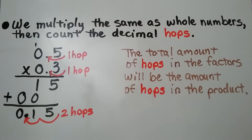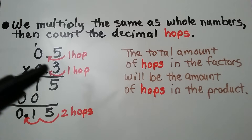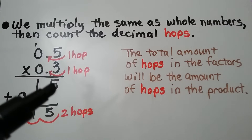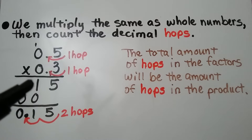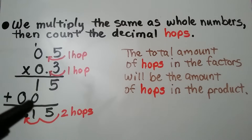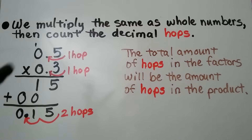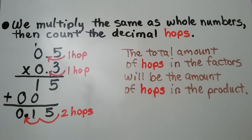We multiply the same as whole numbers, then count the decimal hops. We have 5 tenths times 3 tenths. We multiply it just as if we were multiplying whole numbers. We do 3 times 5, which is 15. We regroup the 1 and write the 5 down. 3 times 0 is 0, plus 1 is 1. And 0 times 5 is 0, and 0 times 0 is 0. Make sure you erase any regroupings from the previous numbers so you don't get them confused when you're multiplying the next number. We add them up and we get 15 hundredths.